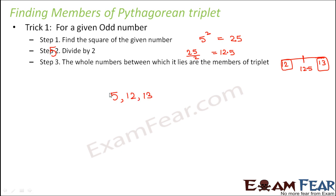So your final triplet is 5, 12, 13. So that simple. Yes the trick is that simple. So you just need to remember these 3 steps when you are given an odd number. Let's take one more example. I think that will be better.